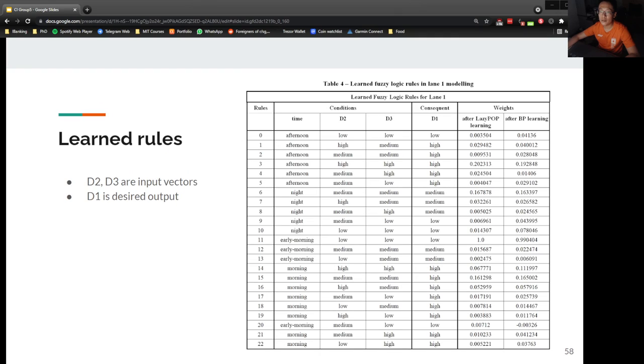The authors also went on to verify the fuzzy rules extracted. The fuzzy rules extracted using lazy POP learning algorithms are presented in several tables. As an example, in Table 4 here, for Lane 1, Rule 0 means that if the time is in the afternoon, D2 is slow and D3 is slow, then D1 will be slow. Time, D2, and D3 are input vectors fed into POPFNN-TVR, and D1 is the desired output. Columns 6 and 7 on the far right give the weights of the link connecting the rule node and respective output label.